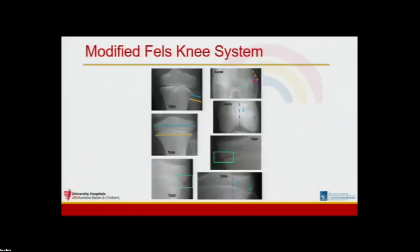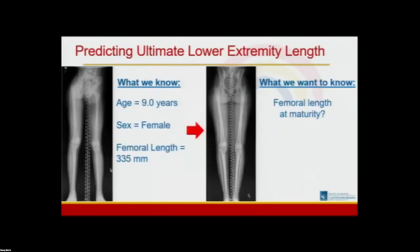Here are the seven parameters of the modified Fells knee system. In each parameter, you either measure the width of a structure, evaluate the shape of the end of the epiphysis, or evaluate physeal closure. While it's heartening to see our system perform better than the Greulich and Pyle historical dataset, it is critical to test our skeletal maturity systems on modern patients to solve clinical problems. We thus applied the modified Fells knee system to a modern pediatric population with limb length discrepancies, with the goal of using the patient's age, sex, and femur length to predict their femoral length on the healthy leg when fully grown.